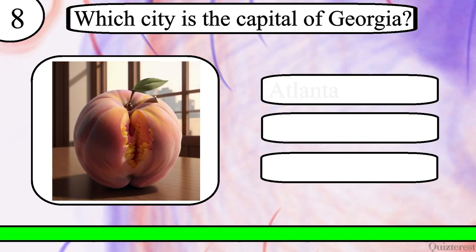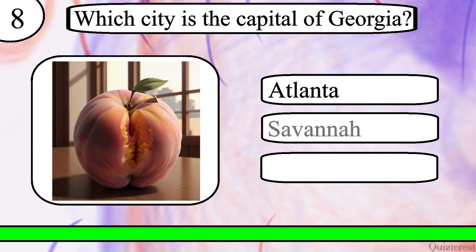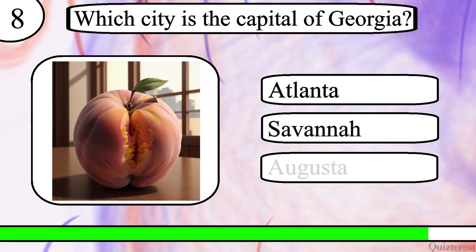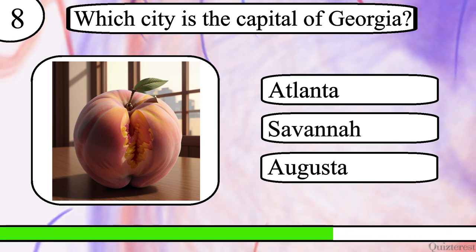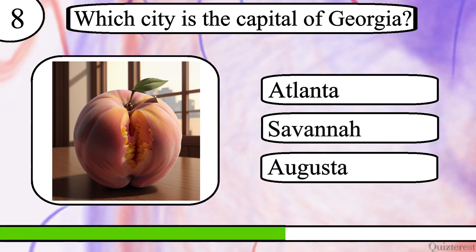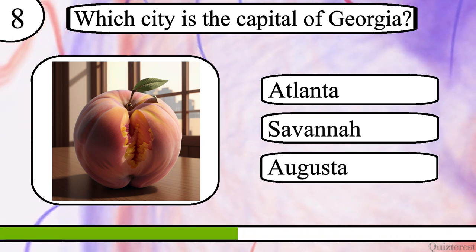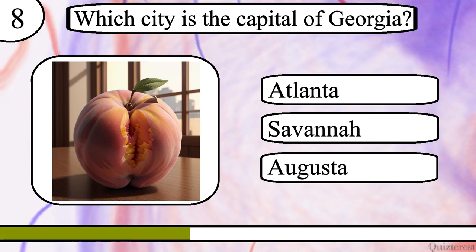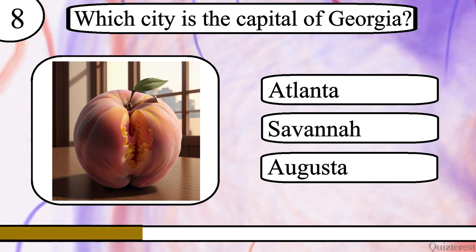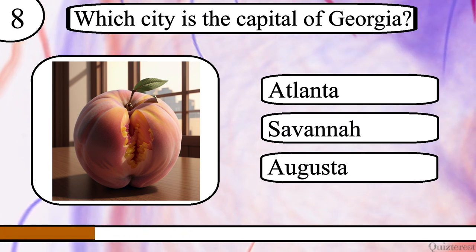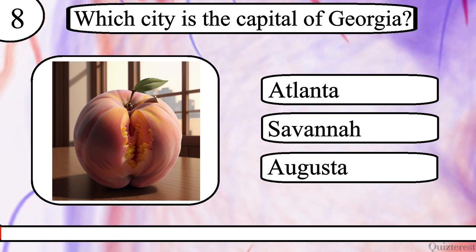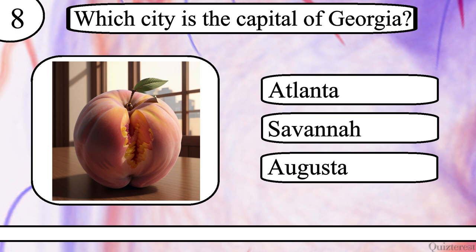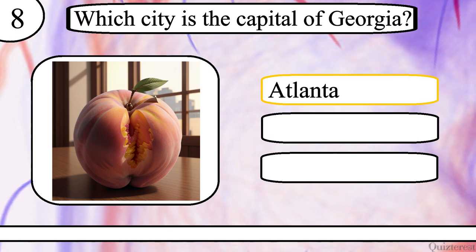Question 8. Which city is the capital of Georgia? Atlanta, Savannah, or Augusta? The correct answer is Atlanta.